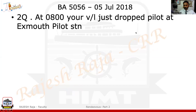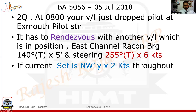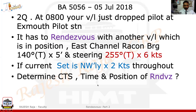I'm going to write the question. At 8 o'clock your vessel dropped the pilot at Exmouth pilot station. It is supposed to rendezvous with another vessel, for which you are given a position based on the East Channel beacon. The target is steering 255 at six knots. The current is setting northwesterly at two knots throughout - meaning both your own vessel and the target have the same current. You need to find the own ship course to steer, the time it will take, and the position of rendezvous.